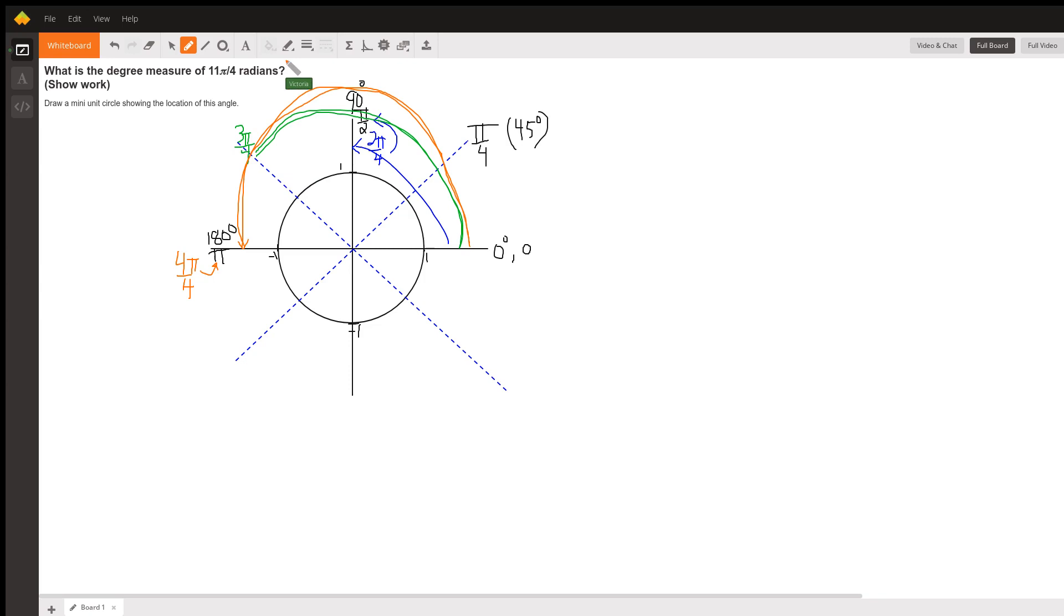So you can keep going around this circle. If I go from 0 over to this one, I have gone 1, 2, 3, 4, 5π/4. When I get here, I've gone 1, 2, 3, 4, 5, 6π/4.